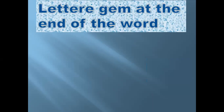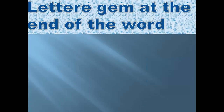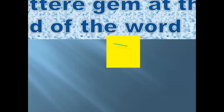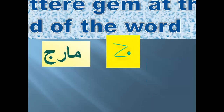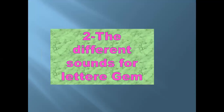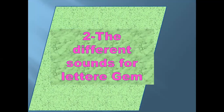Very good. The letter Jim at the end of the word also has two forms. The first one: make a curve with a big stomach, one dot inside. Example: Zawarij. The second form: make an arm from the right.